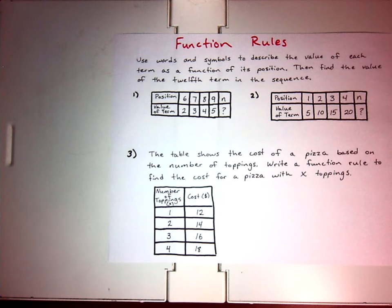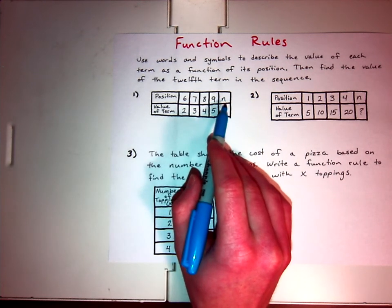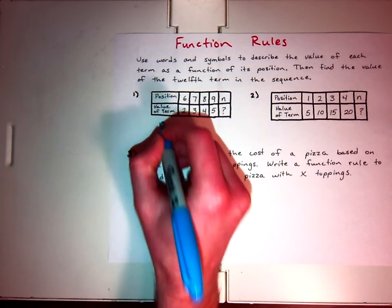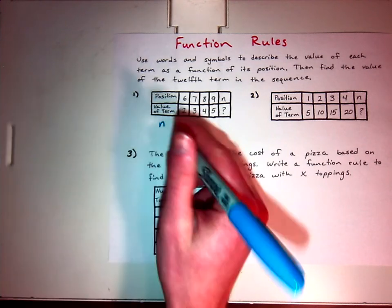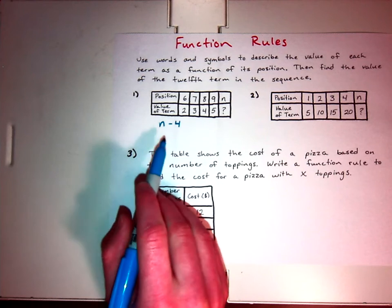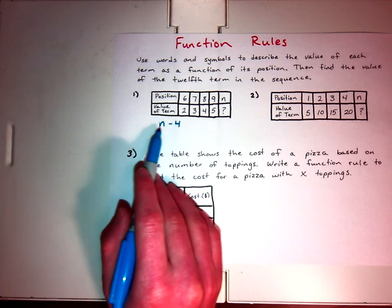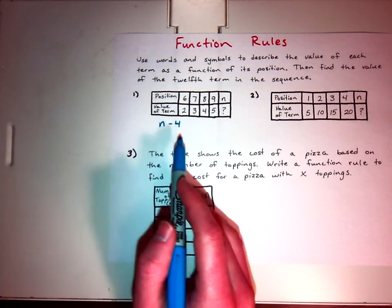Based on its position, they're always taking away four. So how would I write that? If n, they've already defined any number in that position. For any n, that represents what position you're in. You can pick any position. You're always taking away four. So this is the function rule we would write. Any number or any position that we have, you take away four.